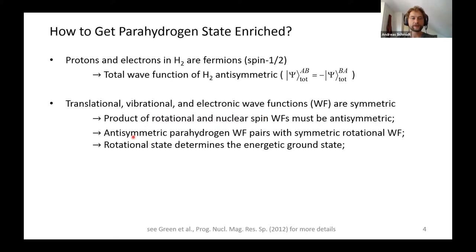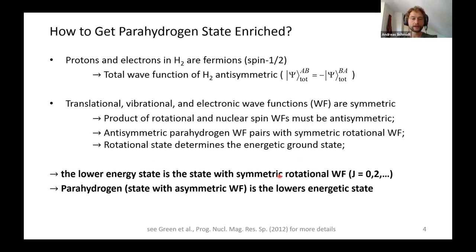As we just saw, parahydrogen is antisymmetric, so it must pair with symmetric rotational wave functions, and vice versa — orthohydrogen pairs with antisymmetric rotational wave functions. Because nuclear spin energy splittings are many orders of magnitude smaller than rotational state energies, the rotational state determines the energetic ground state. The symmetric rotational wave function belongs to J=0, which is the lowest energy state.